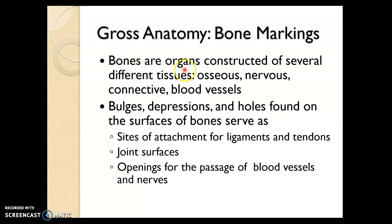Bones are organs. Recall that organs are made up of different types of tissues. Bones are made up of different tissues, including bone tissue itself, along with nerve and blood vessels.